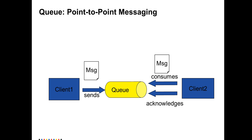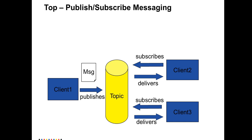So once again, with a queue, one client sends a message and the other client consumes those messages — there is only one client accessing the messages. However, if you have multiple clients, you should use a topic. One client sends a message to the topic, and then client two and client three both consume the same messages.